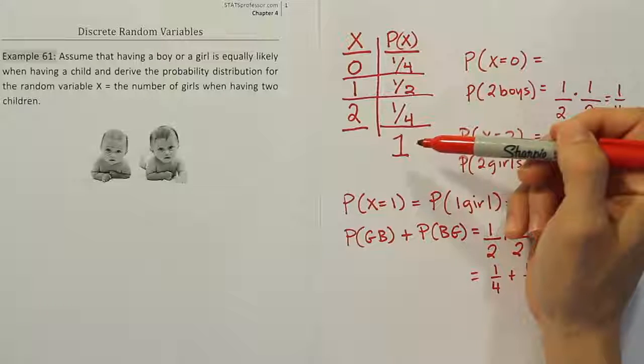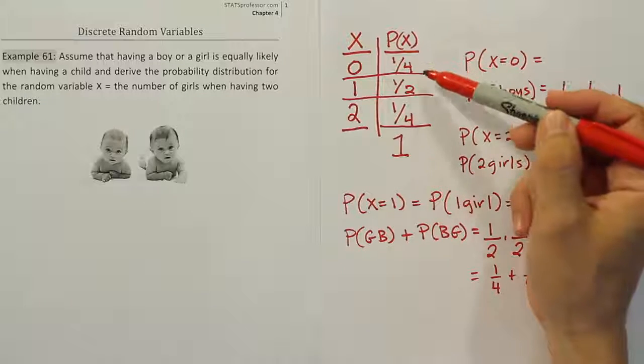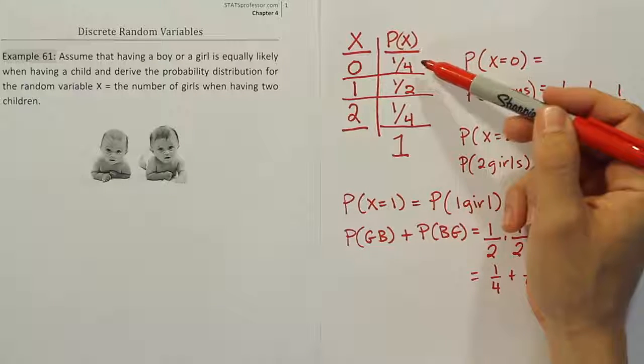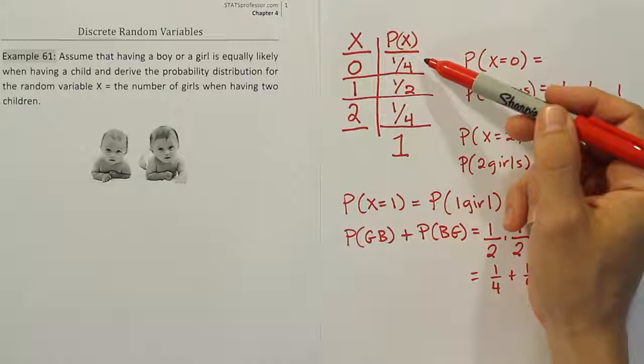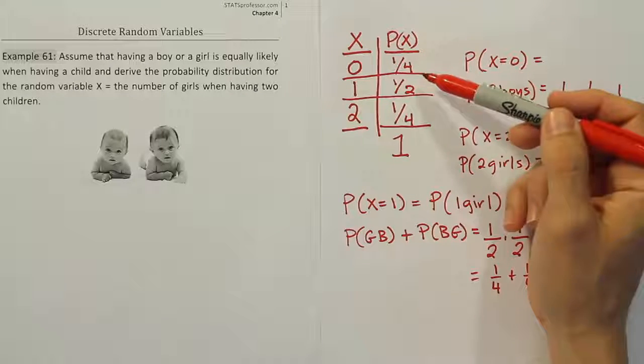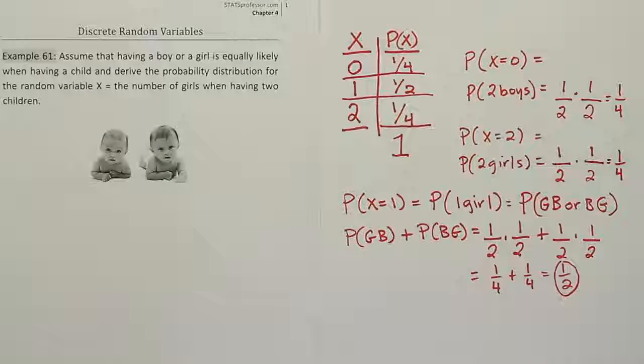The last thing I want to say about the table is you also want to double-check to make sure all your probabilities are reasonable. That means they should be between zero and one inclusive—in other words, you can't have any negative probabilities and you shouldn't have any probabilities that are greater than one. Ours checks out on that, so we're done.